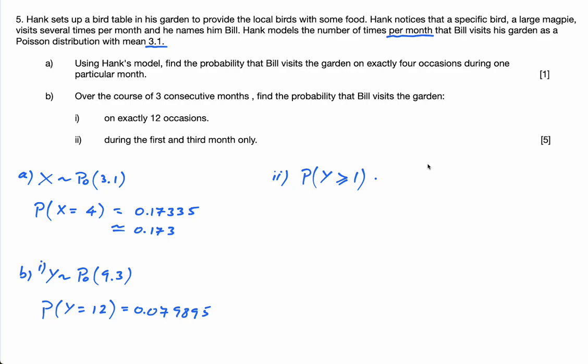Then multiply by, because it's and, and each month is independent. Hang on, this is now back to X. Because I'm looking at each month separately. So I want the probability that X is bigger or equal to 1. Because I'm looking at the probability that he comes at least once in one month. So it's 3.1.